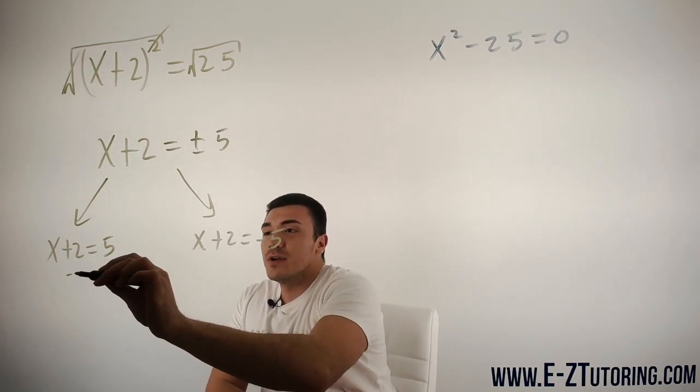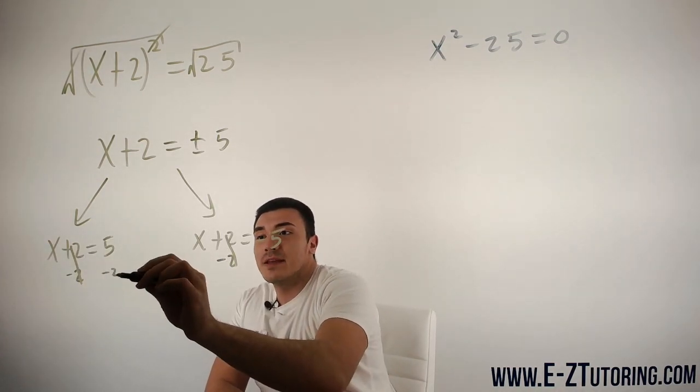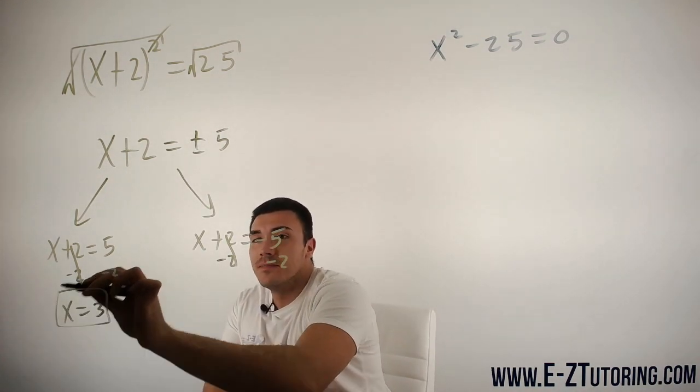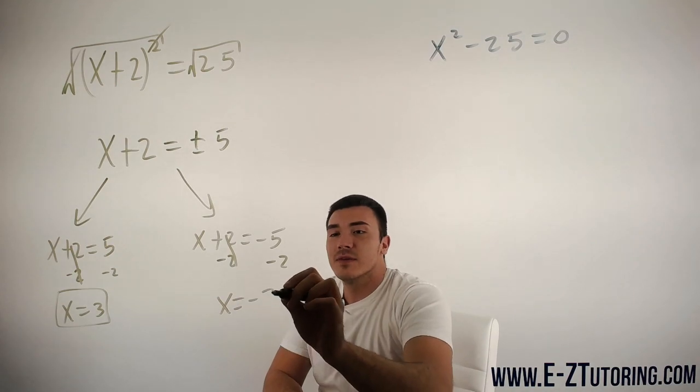We can solve for each one by simply subtracting by 2, and we get that x = 3 and x = -7.